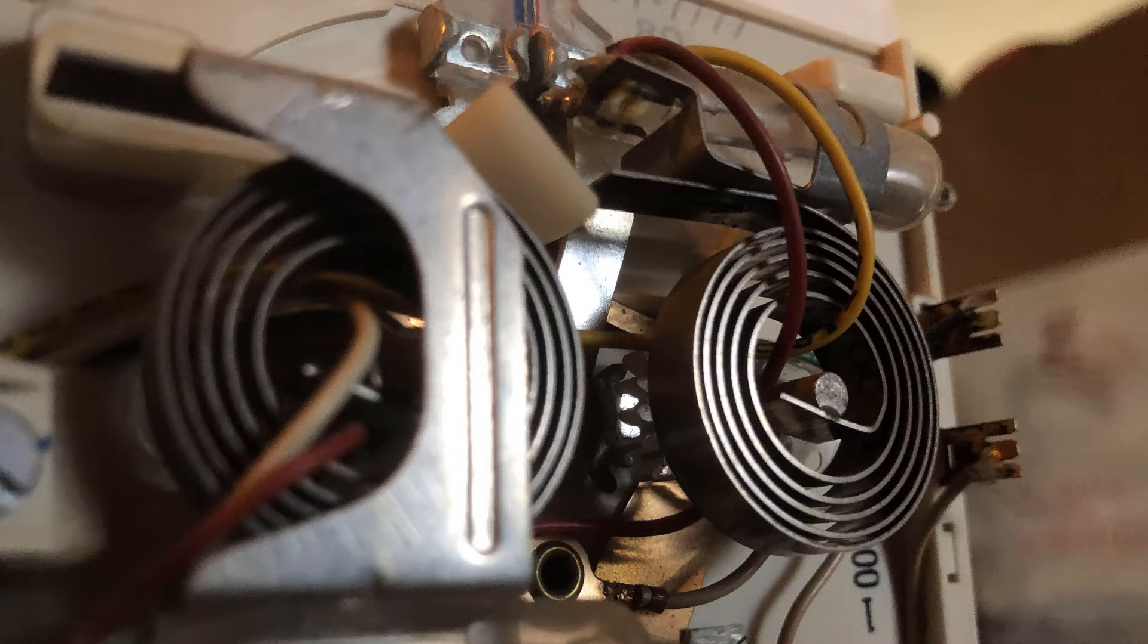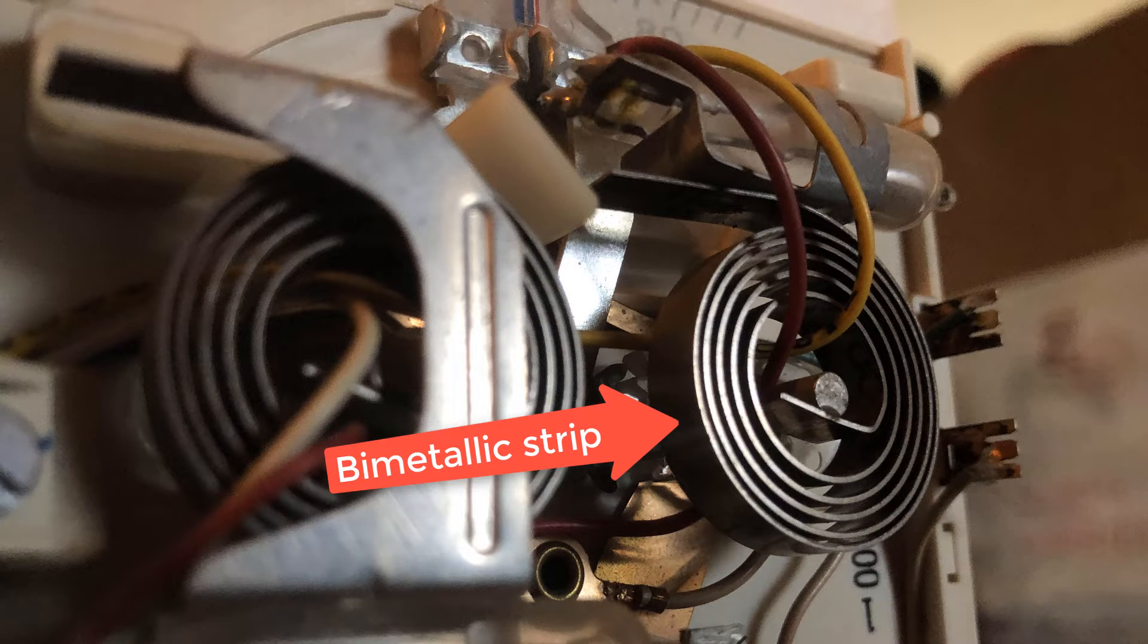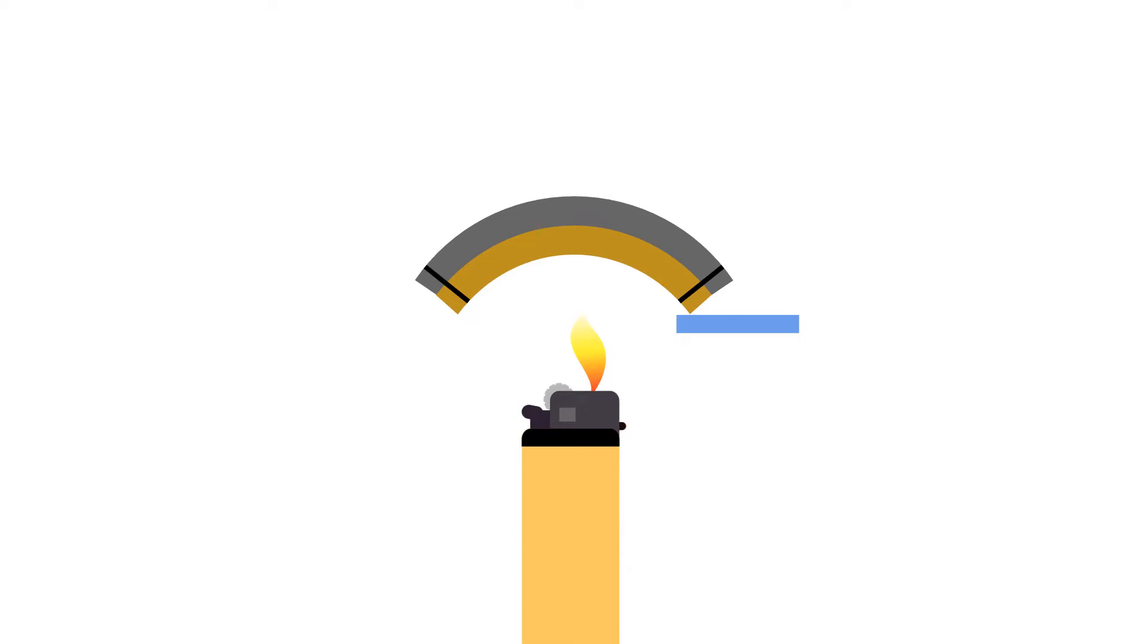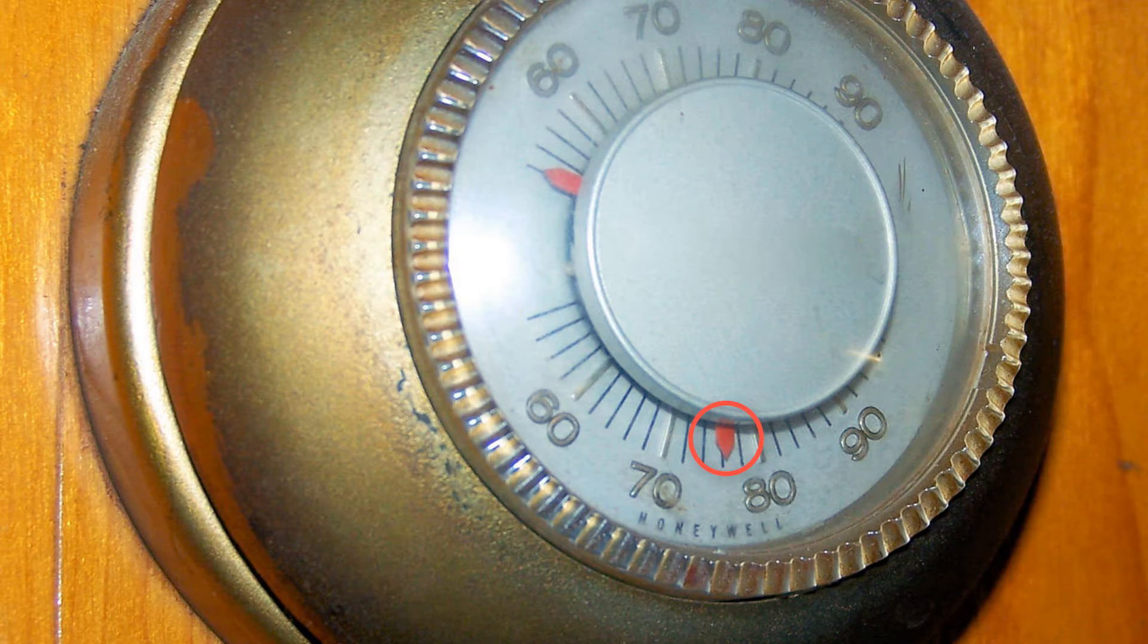If we placed two different types of metal next to each other and heated them, they would expand in size at different rates. One metal strip would expand to be longer than the other. Now if we bind the strips together, the metals will try to expand but end up curving to stay in contact with each other. We can use that motion to connect to a contact or flip a switch. In addition, we can put a needle on one end and use that to indicate temperature.